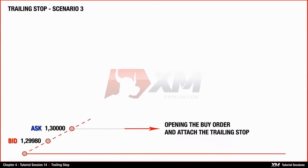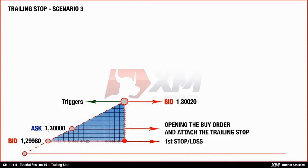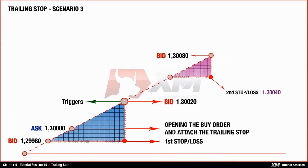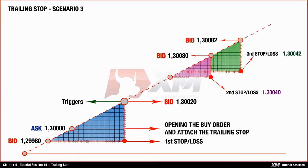Supposing that the market continues moving in your favour, the trailing stop will follow that profit and update the stop loss with a new value according to the previously set distance, which in our example is 40 points, equal to 4 pips. When the price reaches 1.30080, the trailing stop will update your stop loss position at the value of 1.30040. If the price keeps rising to 1.30082, the stop loss value will follow up and update it to 1.30042.